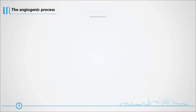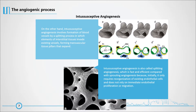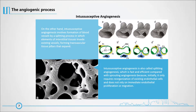Intussusceptive angiogenesis involves the formation of blood vessels by a splitting process in which elements of interstitial tissues invade existing vessels, forming transvascular tissue pillars that expand. Also called splitting angiogenesis, it is fast and efficient compared with sprouting angiogenesis because initially it only requires reorganization of existing endothelial cells and does not rely on immediate endothelial proliferation or migration.